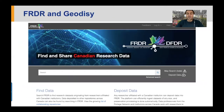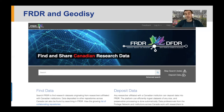FRDR is the Federated Research Data Repository for Canada, which is our discovery interface for Canadian research data. This is the place we expose more than 60 various data sources from Canadian institutions. Geodesy lives right within FRDR, and at this moment provides a complementary map-based search for geospatial data.